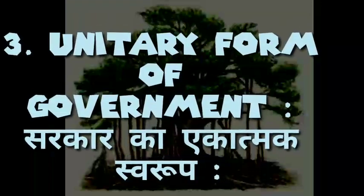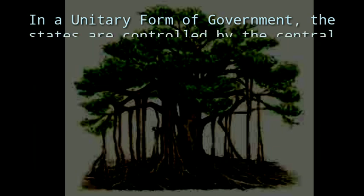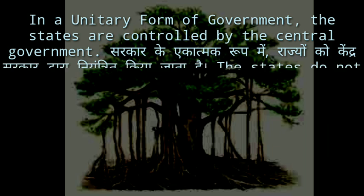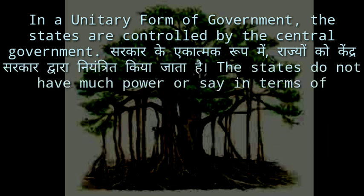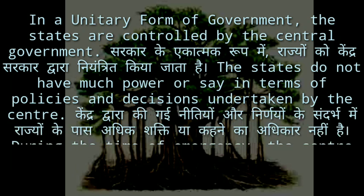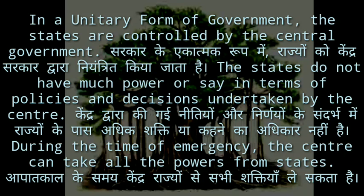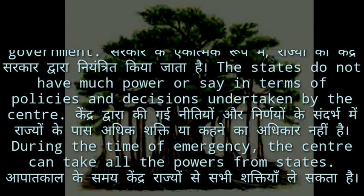3. Unitary form of government — in this system, the states are controlled by the central government. The states do not have much power or say in terms of policies and decisions undertaken by the center. During a time of emergency, the center can take all the powers from the states.